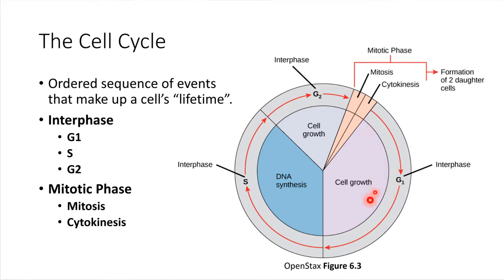There's some cell growth that takes place, and then after a while the cell would go into the S phase. This is still part of interphase. During the S phase — S stands for synthesis — this is where DNA synthesis takes place. So all of the chromosomes would get copied during this point in time, during the S phase.